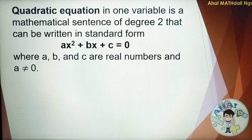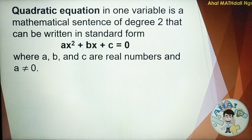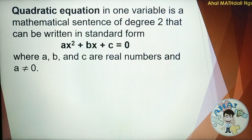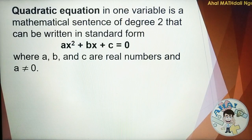There are two points you need to remember for an equation to be quadratic. First, it must have a degree of 2, or the highest exponent is 2. And A must not be equal to 0, because if A is equal to 0, then the equation is no longer quadratic — it becomes a linear equation.